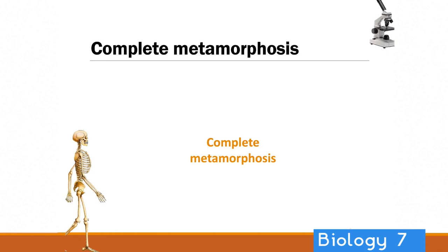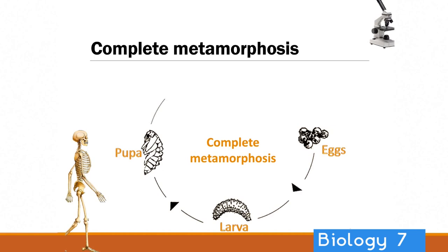In complete metamorphosis this is a little bit different, because there is a complete transition. From the eggs a larva forms, and the larvae then form a pupa prior to turning into an adult. So there's a completely different change in form of that animal — in complete metamorphosis.